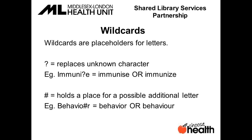The other wildcard is the pound sign, which holds the place for a possible additional letter — both the words with and without the additional letter are found. This is particularly useful for finding both American and British spellings. For example, behavior can be spelled with or without a U, so putting a pound sign where the U would go will retrieve both spellings.